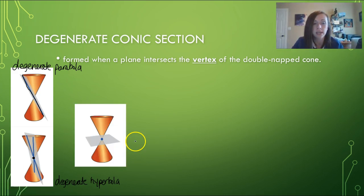The last one is called a degenerate ellipse, and that's when it just strictly goes through the vertex.